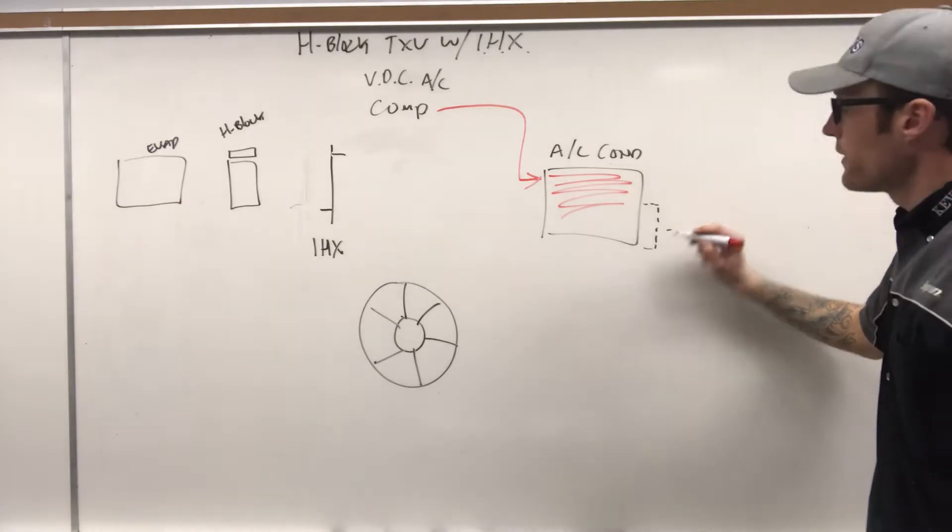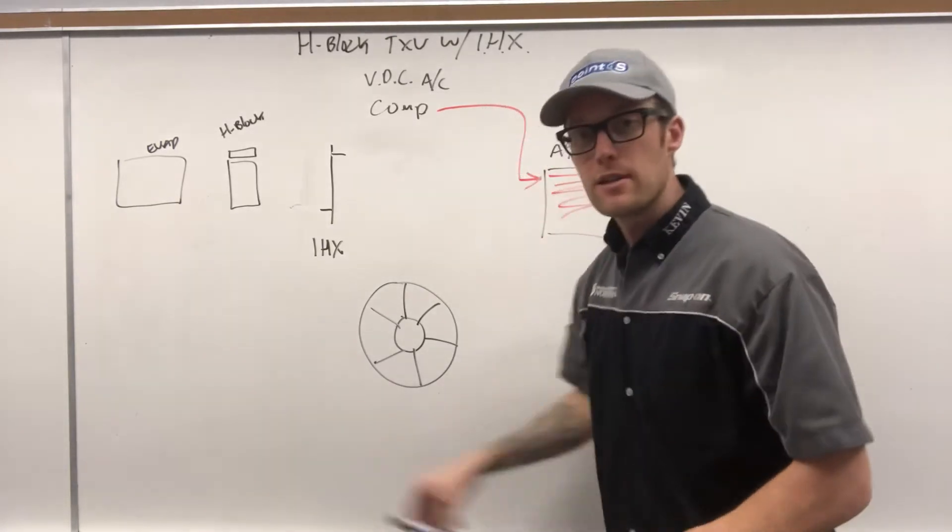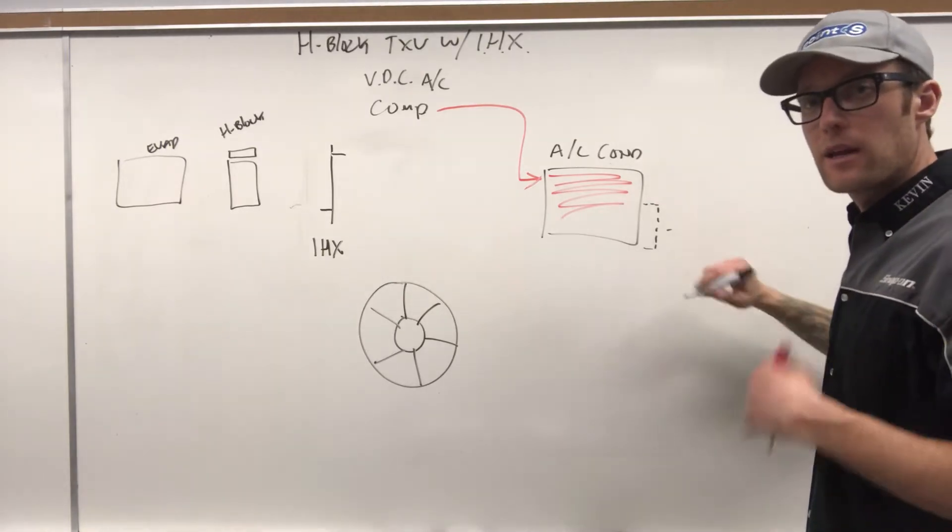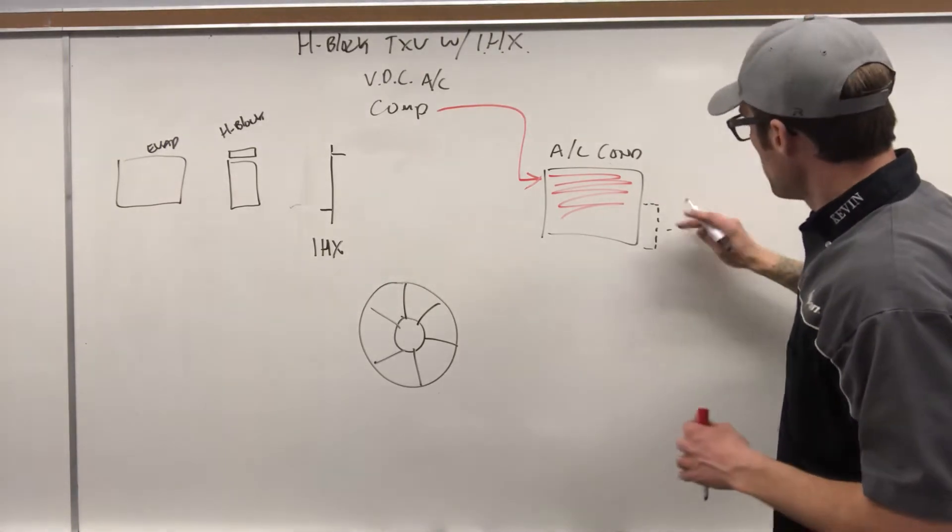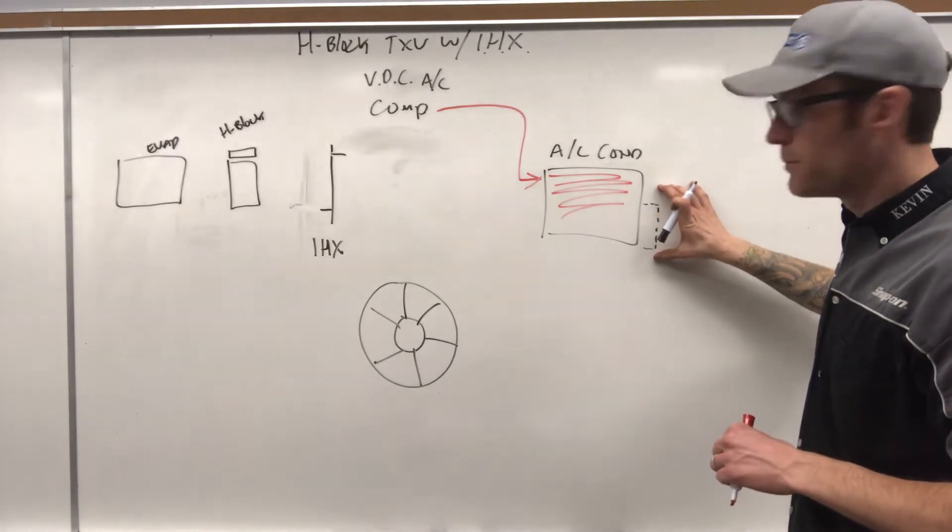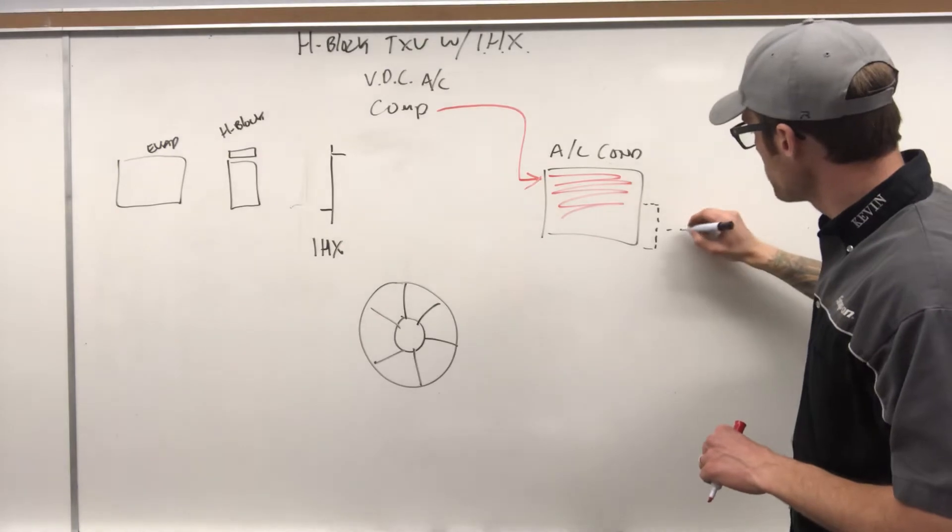One unique component that we put in here to increase our efficiency of this system is, instead of the receiver dryer being a remote unit, we have this tube, if you will, an additional tube, significantly larger, but we call it a modulator. This little puppy's gonna store any liquid that is accumulated in the condenser.